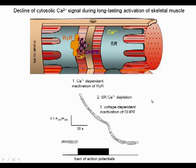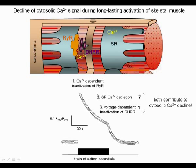Calcium-dependent inactivation occurs in a few milliseconds, but much attention has been paid to the two other processes because they occur on a much longer time scale and play a crucial role in the decline of contractile performance during long-lasting muscle activation, eventually contributing to fatigue. However, the relative contribution of SR calcium depletion and voltage-dependent inactivation in the decline of calcium signals is not clearly established. The aim of the present study is to determine which one of the two predominates during long-lasting activation by combining voltage clamp with either cytosolic or SR-lumenal calcium dyes.